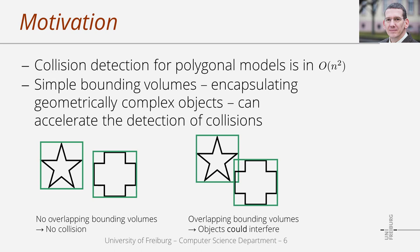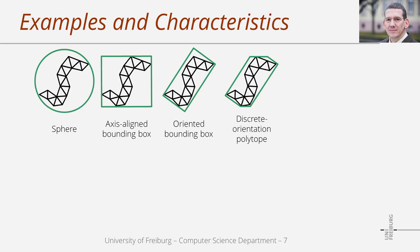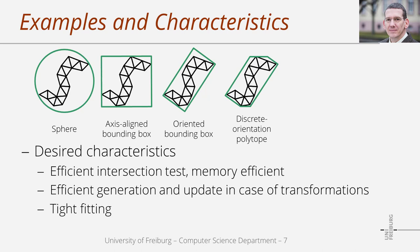Please note that bounding volumes are not helpful if they overlap — further tests have to be performed. Example shapes used in collision detection include spheres, axis-aligned bounding boxes, oriented bounding boxes, and discrete orientation polytopes. The motivation for using these shapes is always the same: they should provide simple and efficient intersection tests, memory-efficient representation, efficient generation and update in case of object transformations, and they should be tight-fitting. Since bounding volumes are only helpful if they do not overlap, they should be as small as possible.